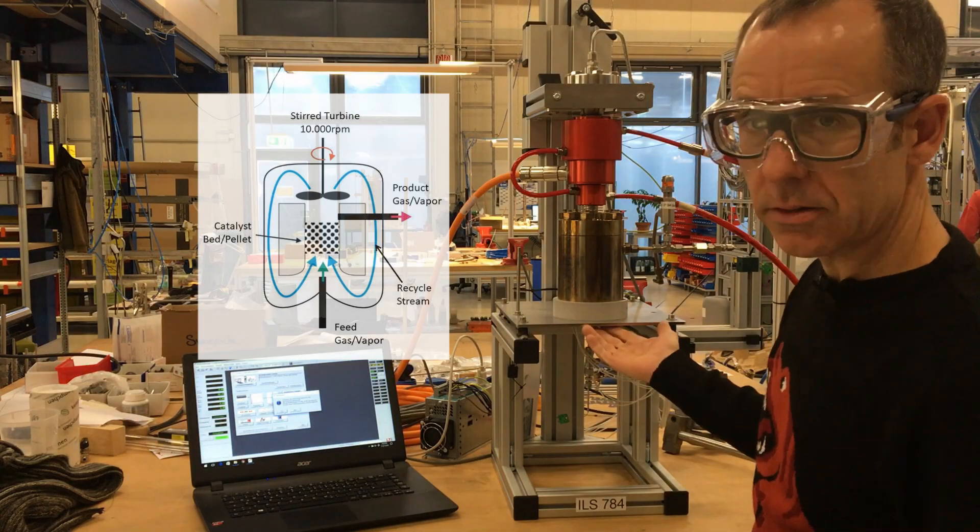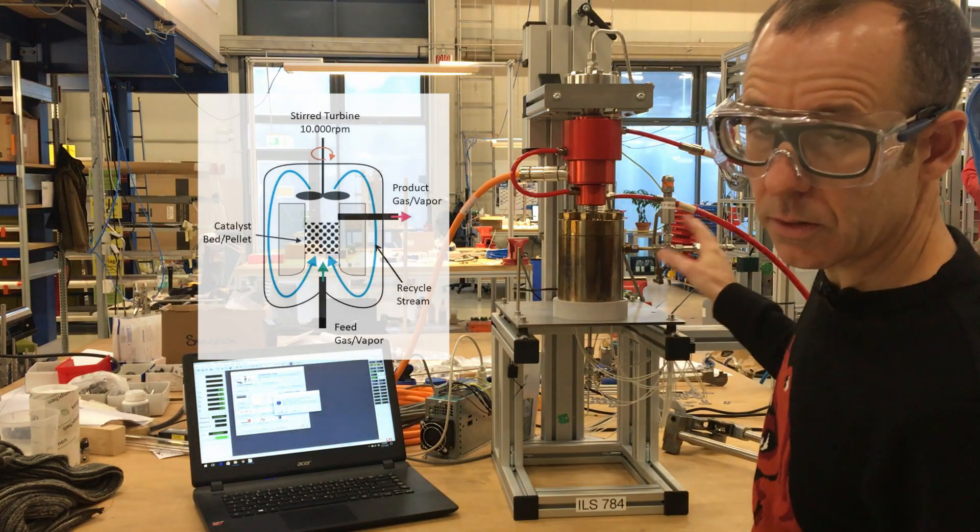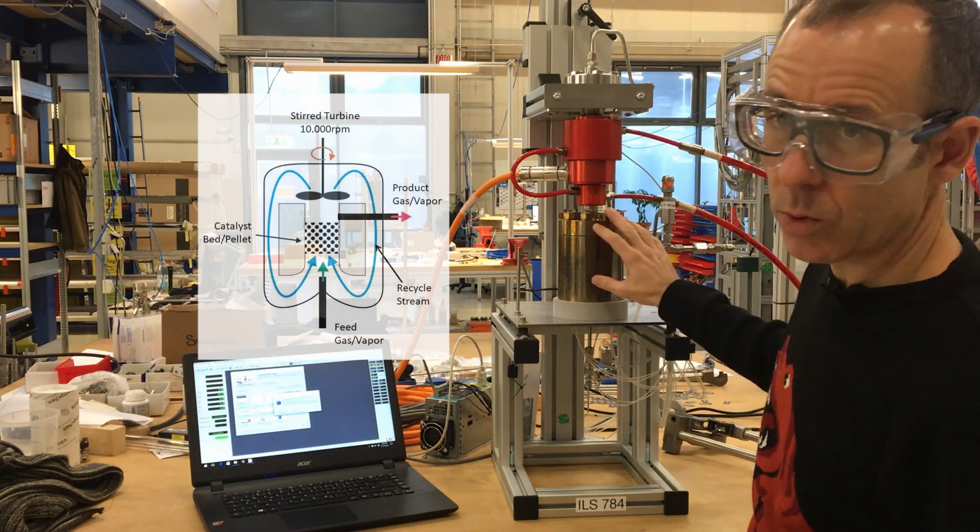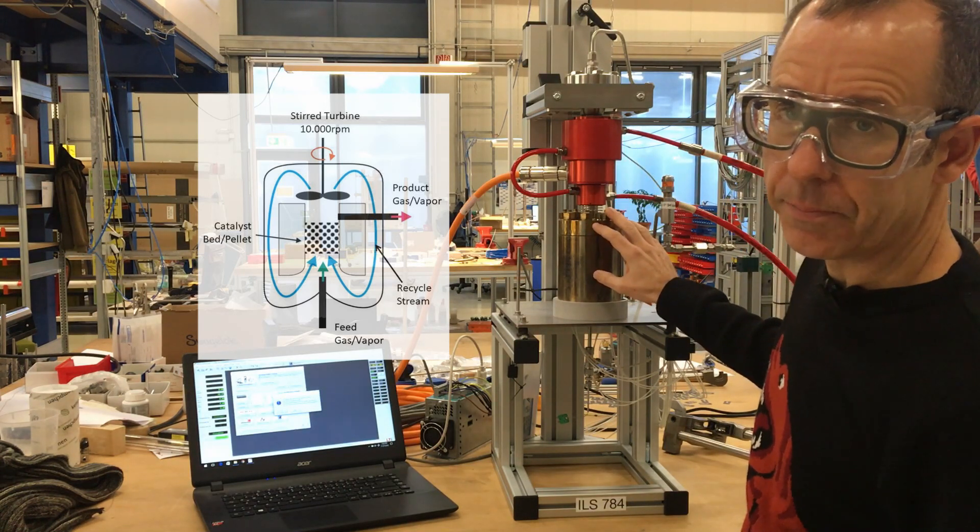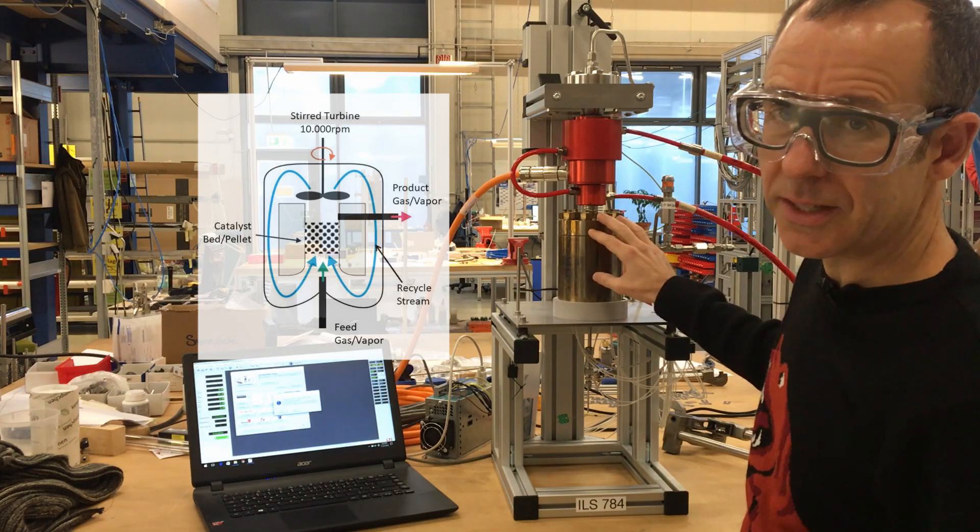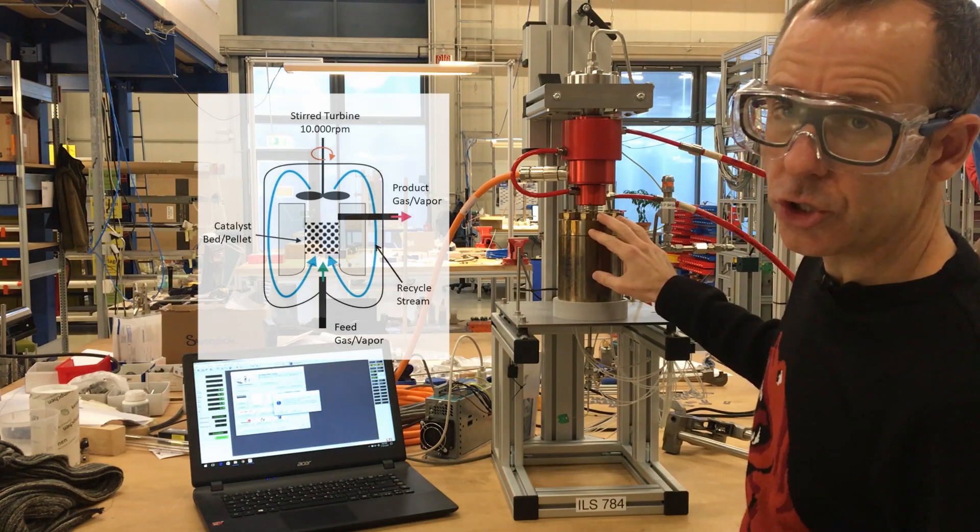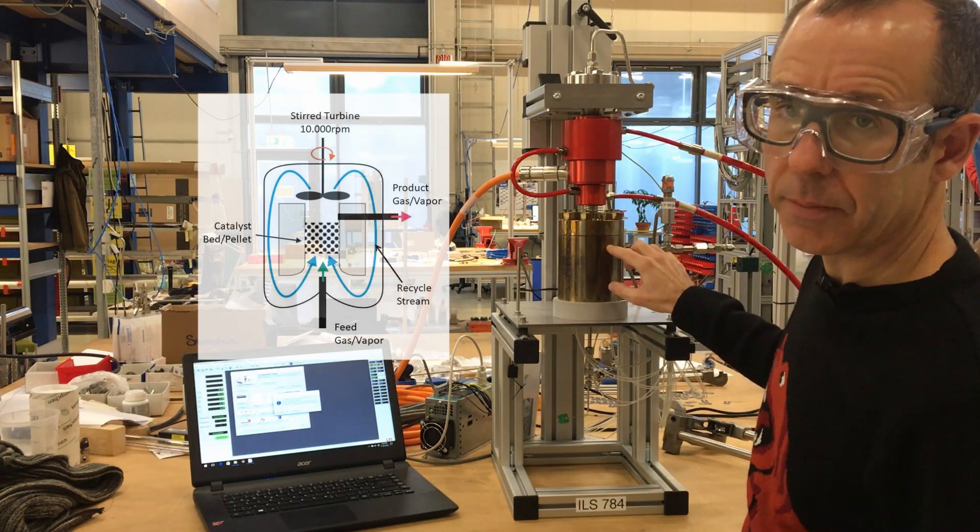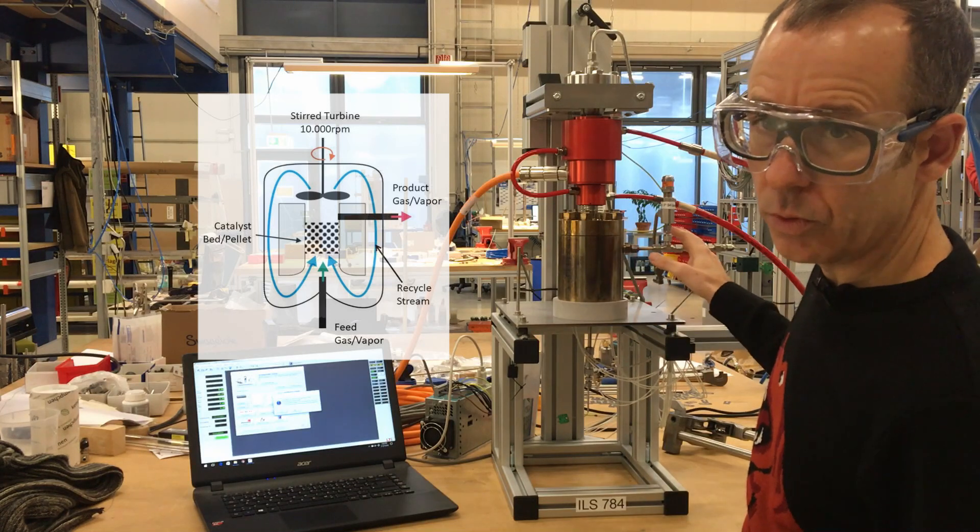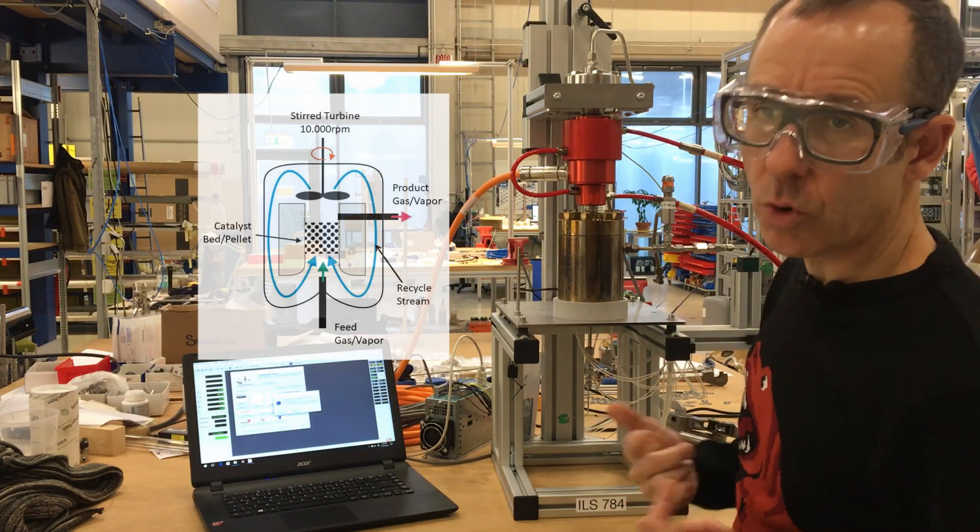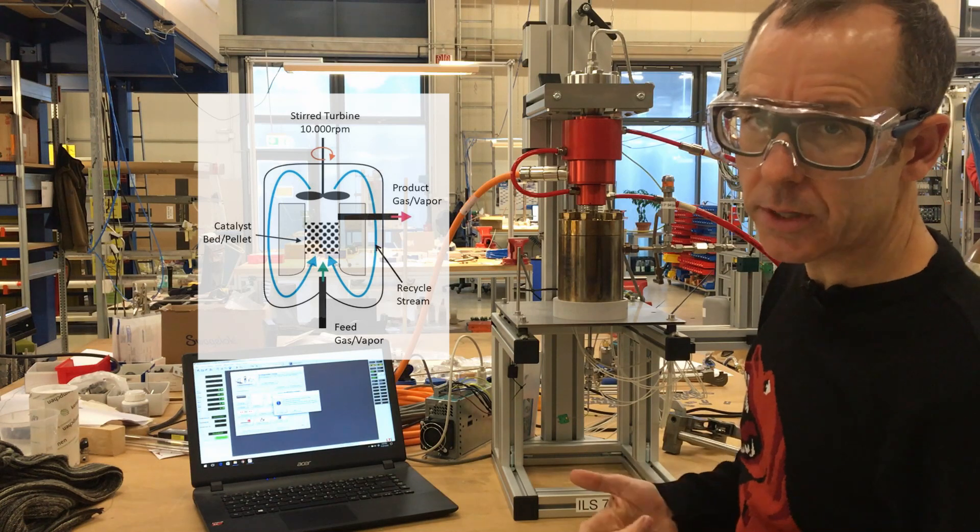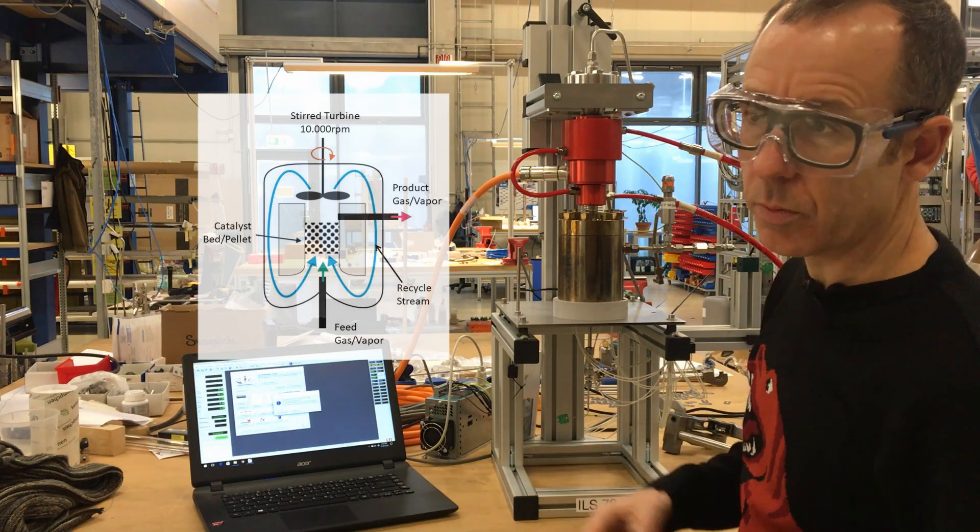You feed gas, you remove gas continuously, so this is a continuously operated reactor, and you have a rotor stator system inside where this rotor spins at up to 10,000 RPMs, generating an internal recycle. Meaning gas is fed, gas is removed, but the gas passes over the catalyst bed many more times than it's inserted or removed.